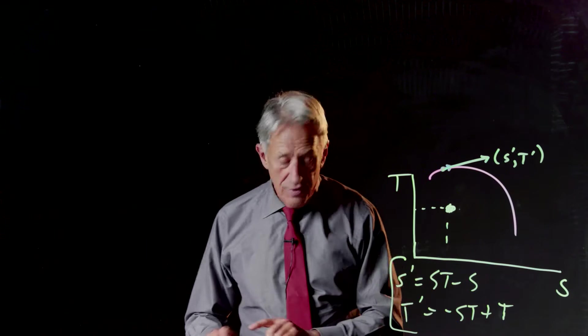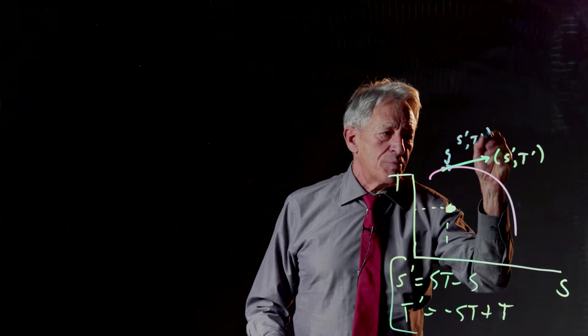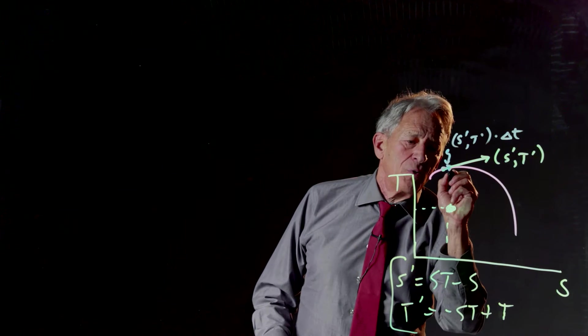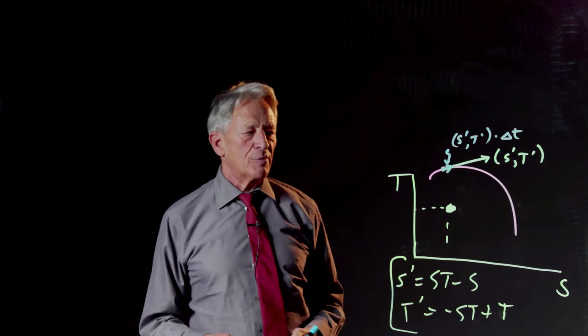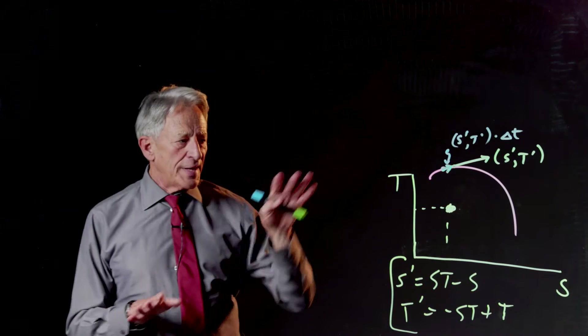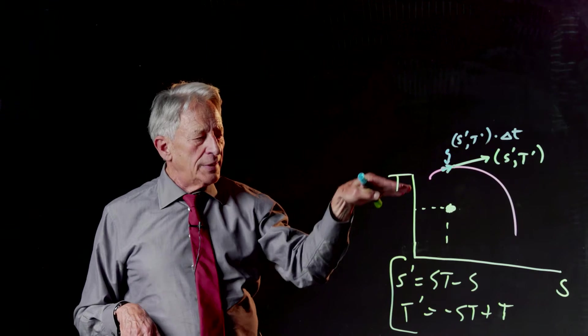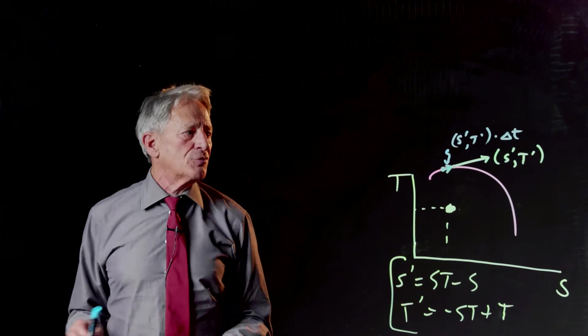And then the little blue segment is s prime t prime times delta t, and that's our little Euler's segment, and then we're going to be at a new point, and we're going to repeat that process. So that's what it looks like geometrically. We're literally lurching in little finite steps to approximate the red curve.